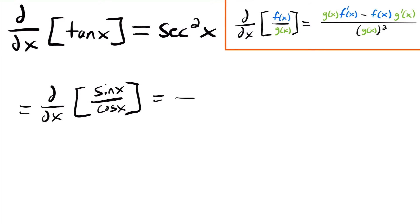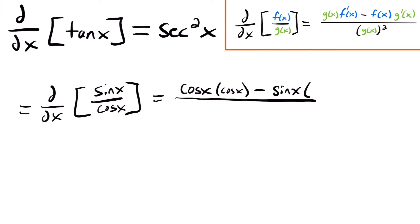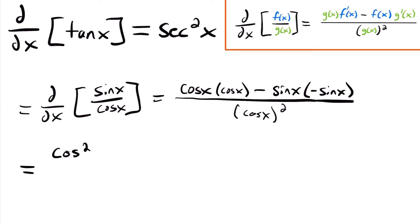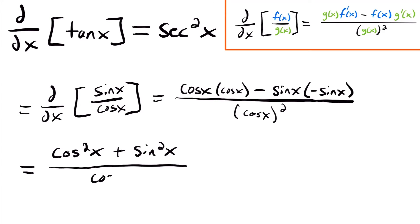Using the quotient rule, we have the denominator cosine x times the derivative of the numerator. The derivative of sine x is cosine x. Then we subtract the numerator sine x times the derivative of the denominator cosine x, which is negative sine x. This is divided by cosine squared x. Simplifying, we get cosine squared x, and because of the subtraction and negative, we get plus sine squared x, all divided by cosine squared x.